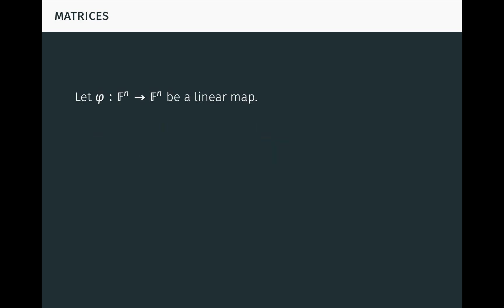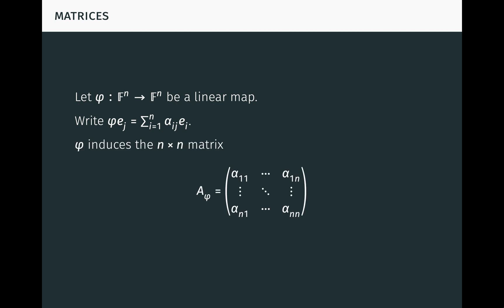Conversely, let φ on F^n be an arbitrary linear map. Recall that a linear map is completely determined by its action on a basis. We write φ(e_j) as the sum, for i from 1 to n, of α_ij · e_i, where the e's are the standard basis vectors in F^n. Then φ induces the n-by-n matrix A_φ consisting of the α's. This matrix captures or encodes all the information about φ.